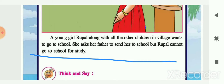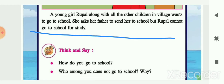Rupal asked her father to send her to school and her father agreed. But Rupal cannot go to school for study. Why she cannot go to school, we will find further. Before that, two questions are given: How do you go to school? And who among you does not go to school, and if not, what is the reason?